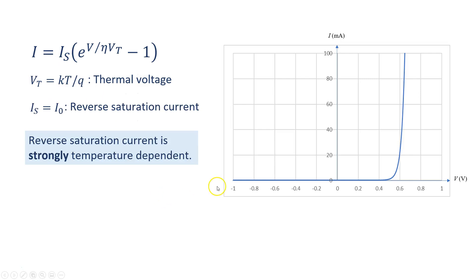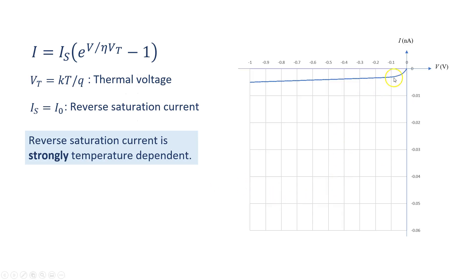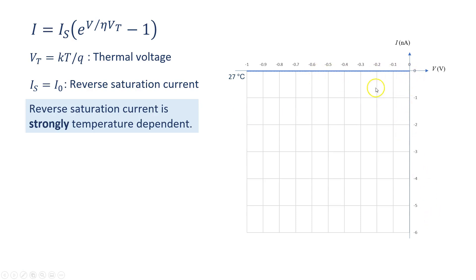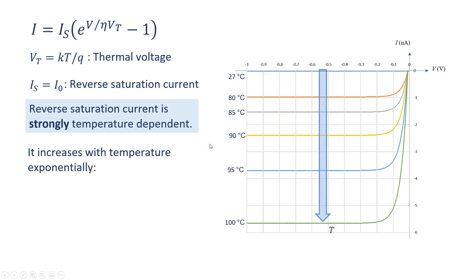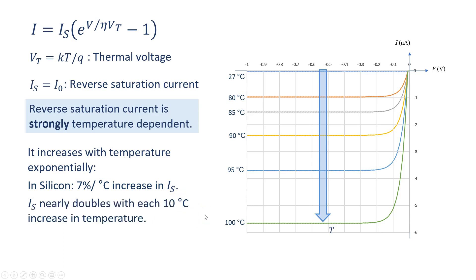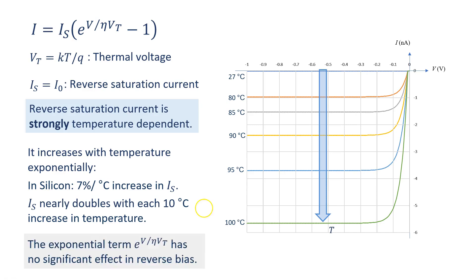The reverse saturation current at room temperature is very small compared to the forward current and cannot be seen well on the IV graph. For the diode used here it is about a few picoamps. At a scale of 10 nanoamps it is very close to zero and can hardly be seen, but when we increase the temperature we can see that it increases significantly. Its increase with temperature is exponential — in silicon the rate of increase is about 7% per degree Celsius, or it nearly doubles with each 10 degrees Celsius increase in temperature.